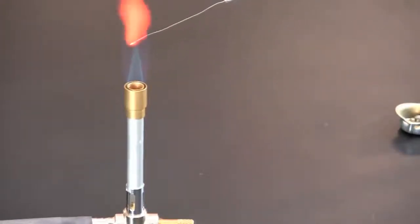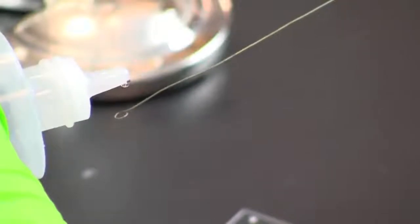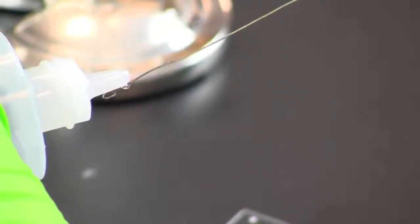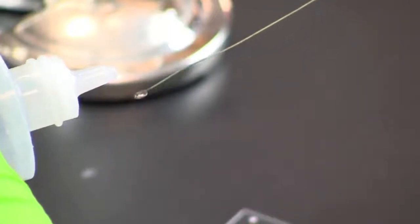Using a metal inoculation loop, sterilize it by flaming. Using aseptic technique, add a drop of sterile water so that a film appears across the loop. Transfer the water into the circle drawn by the wax pencil.